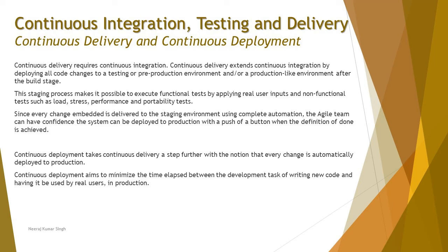Continuous deployment takes continuous delivery a step further with the notion that every change is automatically deployed to production. It aims to minimize the time elapsed between writing new code and having it used by a real user in production. The most important aspect of continuous deployment is consistently deploying to the production environment, reducing the gap between the code being written and users using it. Together, continuous delivery and deployment depend on how active and frequent your continuous testing is, which gives you the confidence that the code can be put into production.